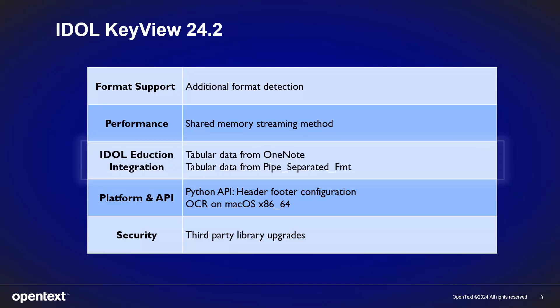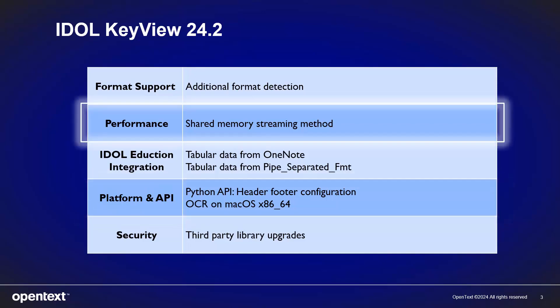24.2 enables OCR on all macOS platforms. This is in addition to the Windows and Linux platforms that OCR was already provided on. And 24.2 improves streaming performance when running out of process.